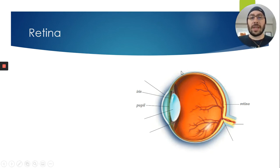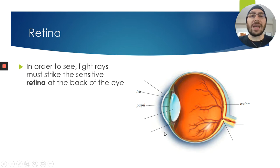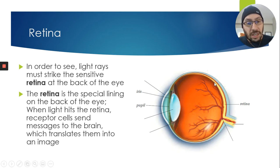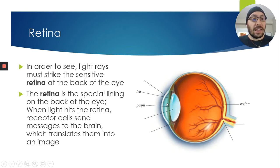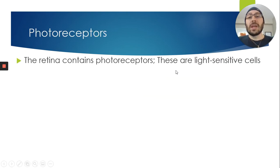The retina is a very important part of the eye — it's where image formation actually occurs. Light rays must strike this sensitive area at the back of the eye. The retina is a very thin lining of cells covering the back of the eye, and these cells have special photoreceptors that send messages to the brain telling us what we're looking at.